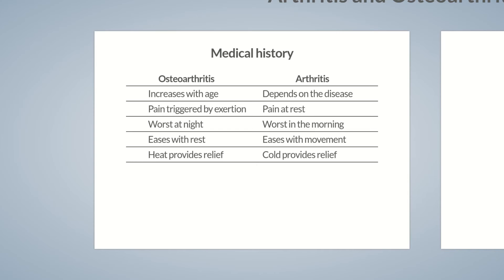To summarize the characteristics of arthritis: age distribution depends on the type of disease. Arthritis is characterized by pain at rest and in the morning that is alleviated through physical activity and cold therapy.